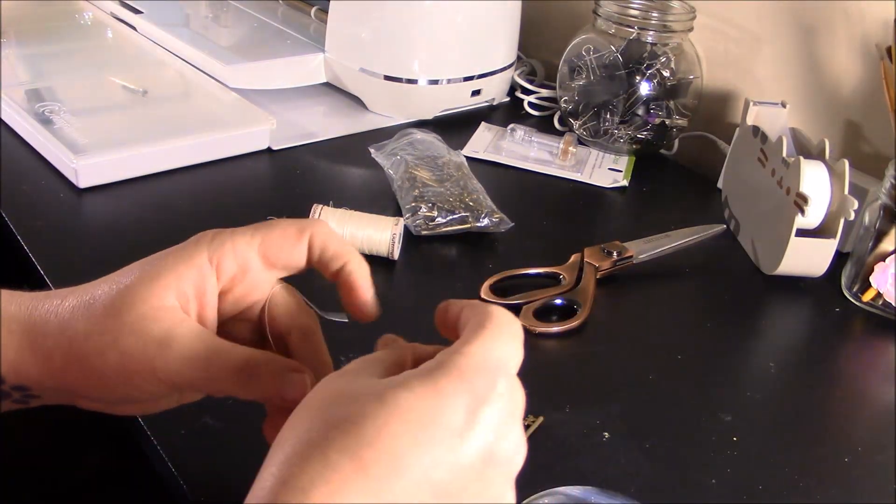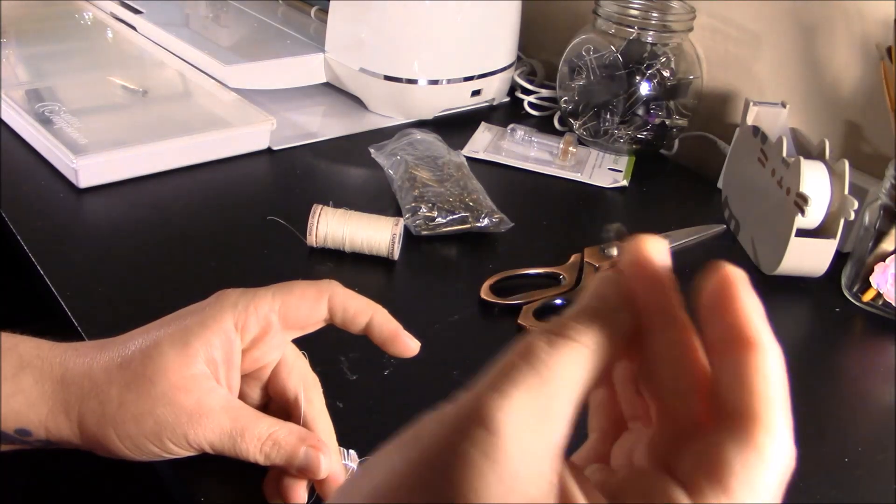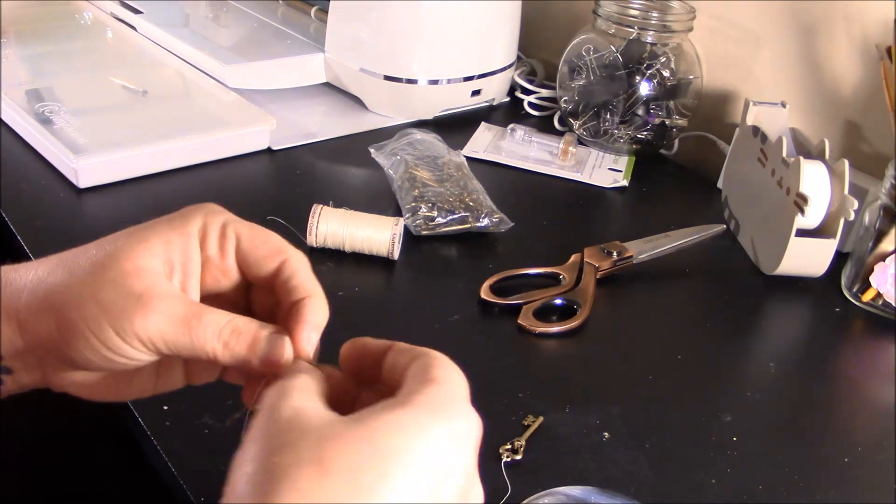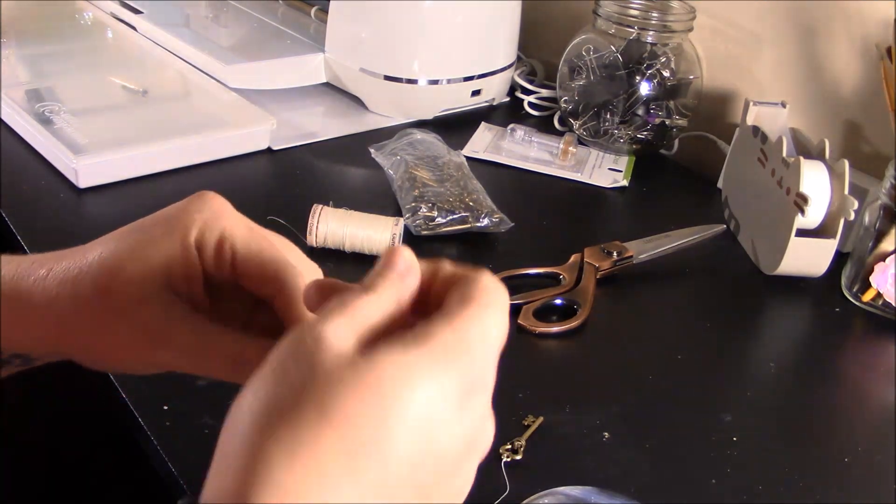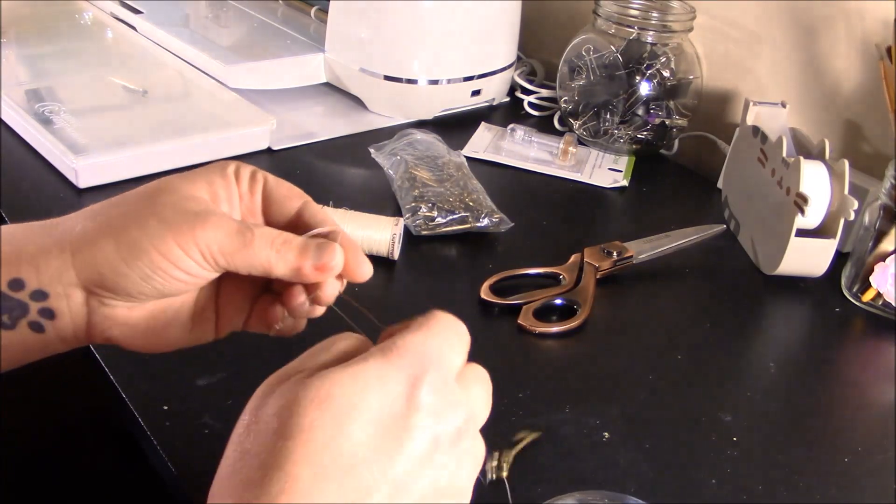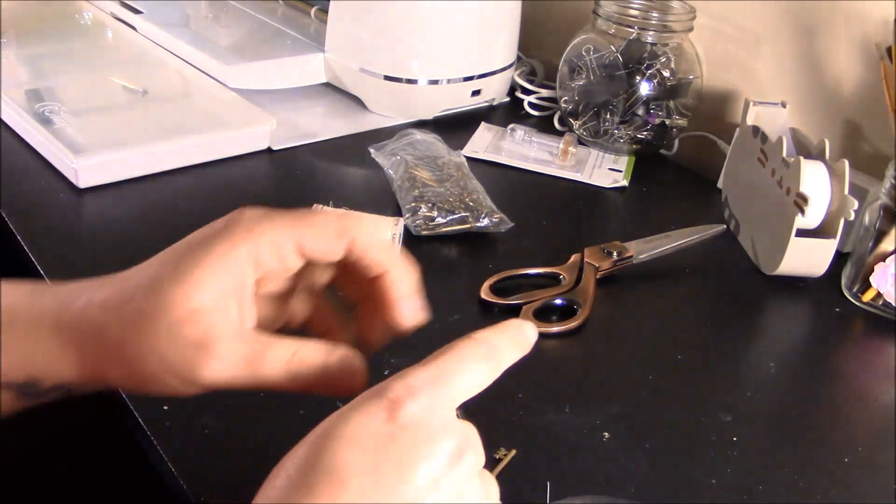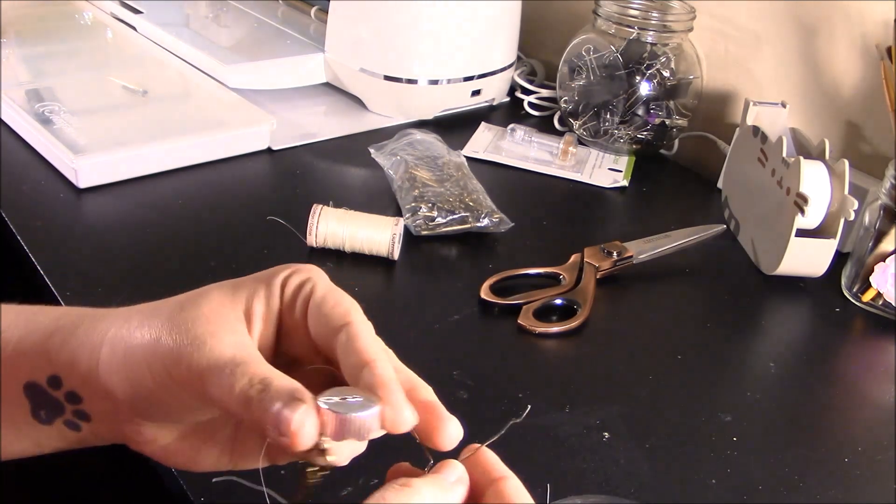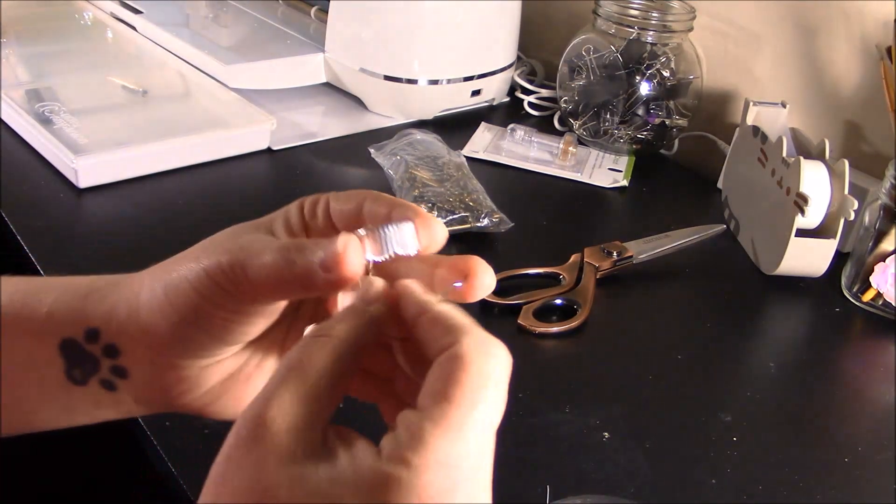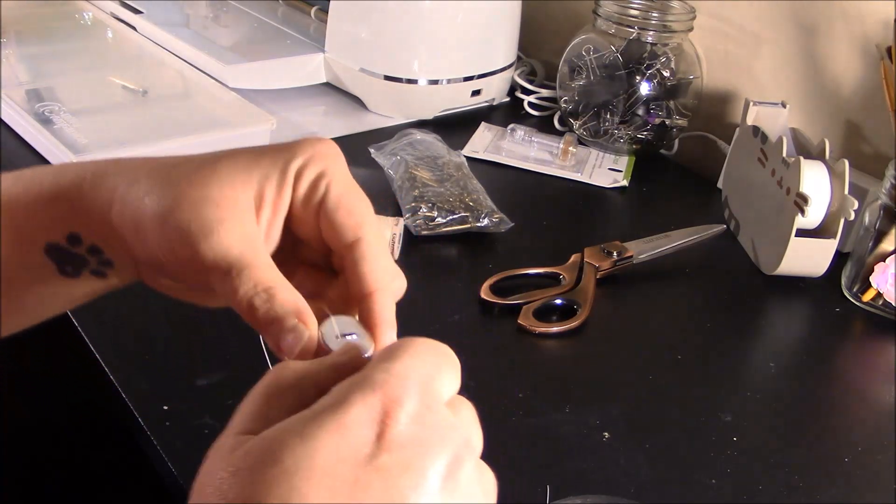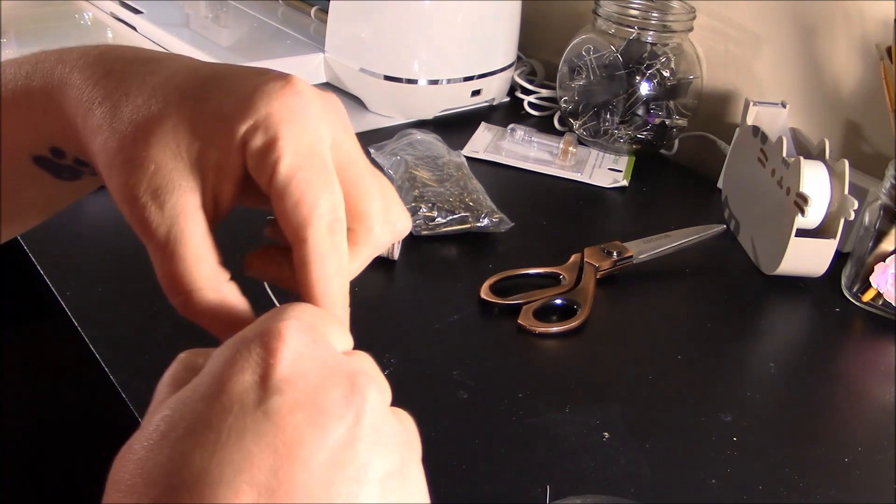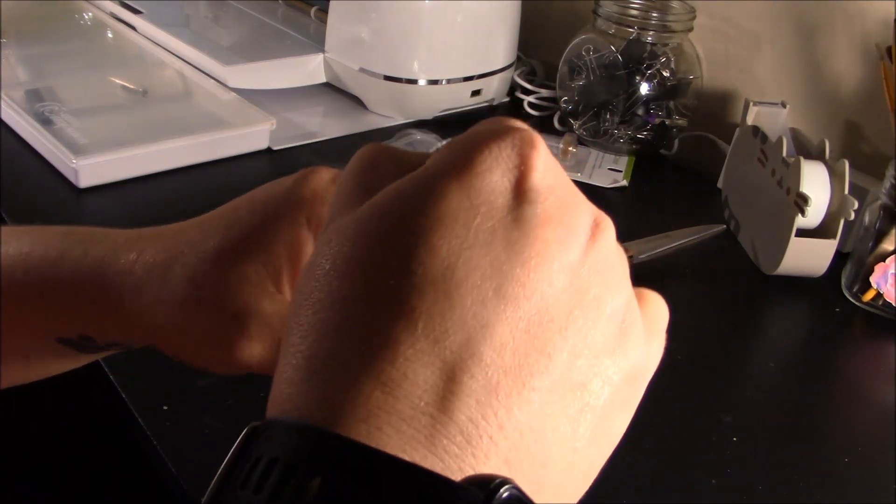You're going to run your string up. You're going to take your string, and just like you thread it through your key, you're going to thread it through the top of your ornament. And then what I do is I take this piece, your little round piece, and I will tie the knot to the round piece. But I won't do that right now because I need to put it in the ornament in order to do that so I know how tall to make it.